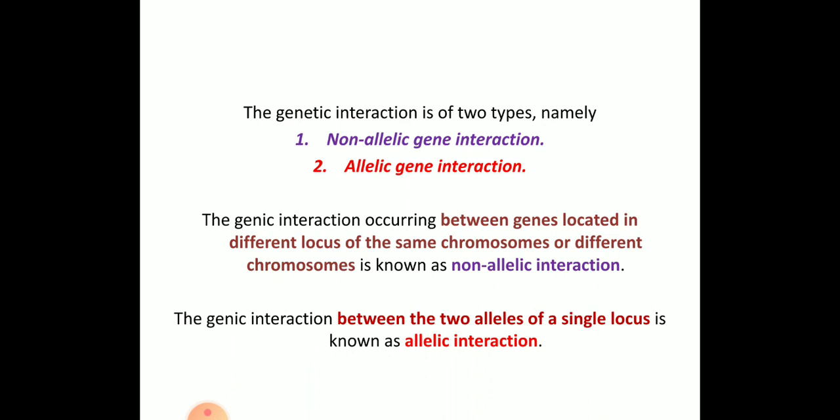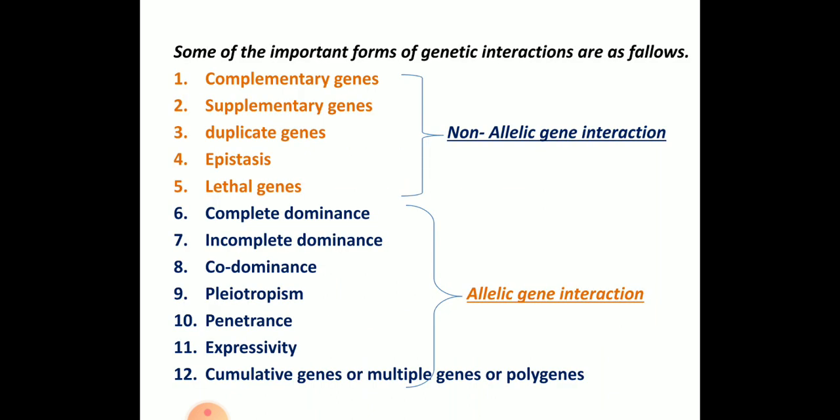Interaction of genes is of two types: non-allelic interaction and allelic interaction. In non-allelic interaction, the gene interaction occurs between genes located at different loci of the same chromosome or different chromosomes. In allelic interaction, the genetic interaction occurs between the two alleles of a single locus. Examples under non-allelic interaction include complementary genes, supplementary genes, duplicate genes, epistasis and lethal genes.